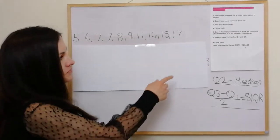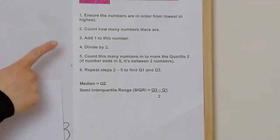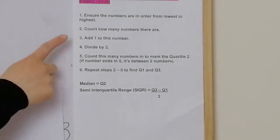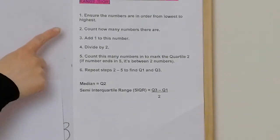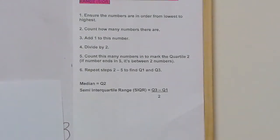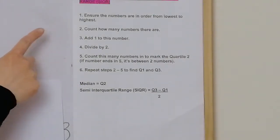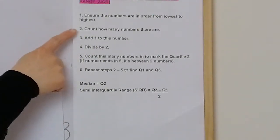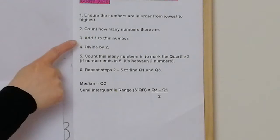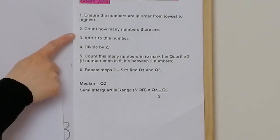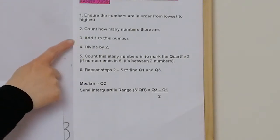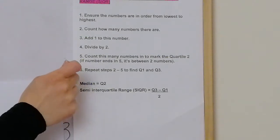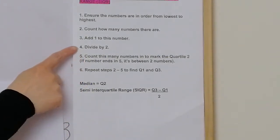So we have this six-step guide here. The first step asks us to ensure that the numbers are in order from lowest to highest. All the examples we've got already have the numbers in that order. I'd also suggest you get a screenshot of this or copy it down. The next part is to count how many numbers there are.